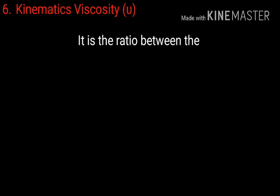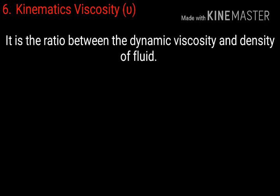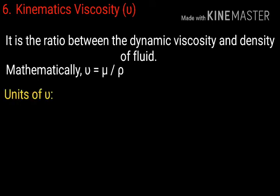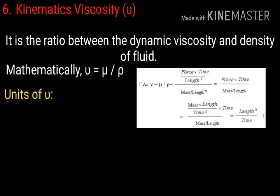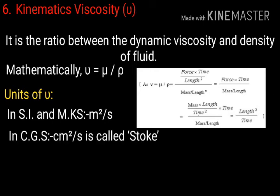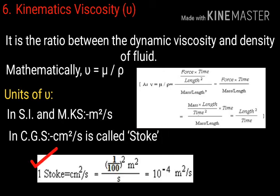Now, kinematic viscosity which is denoted by ν. It is the ratio between the dynamic viscosity and density of fluid. Mathematically, ν = μ/ρ. In SI and MKS, it is meter square per second. And in CGS, it is centimeter square per second which is called stoke. One stoke equals to 10 to the power minus 4 meter square per second.